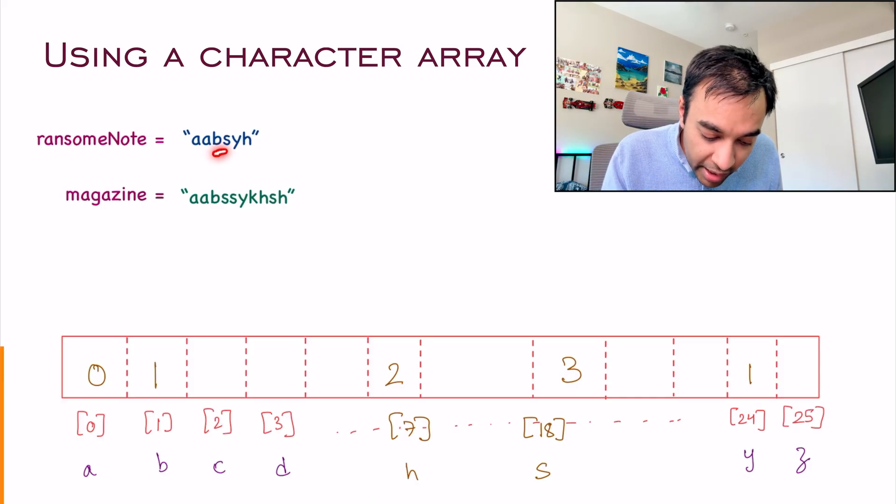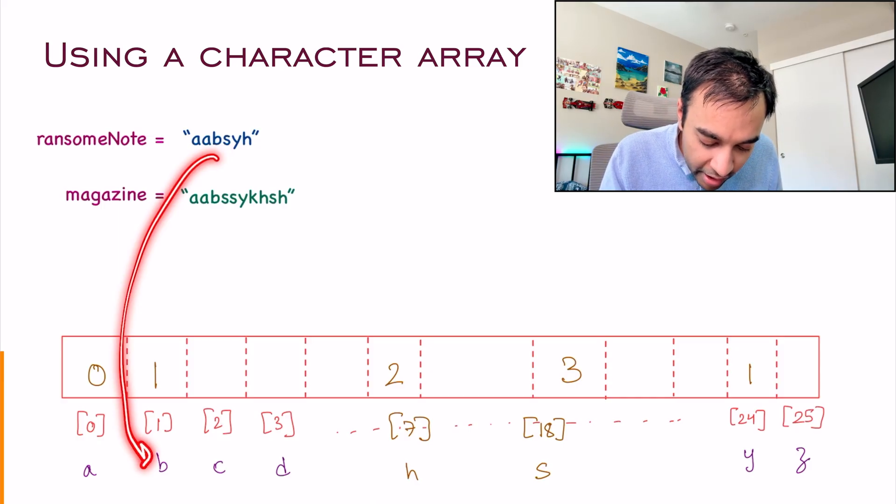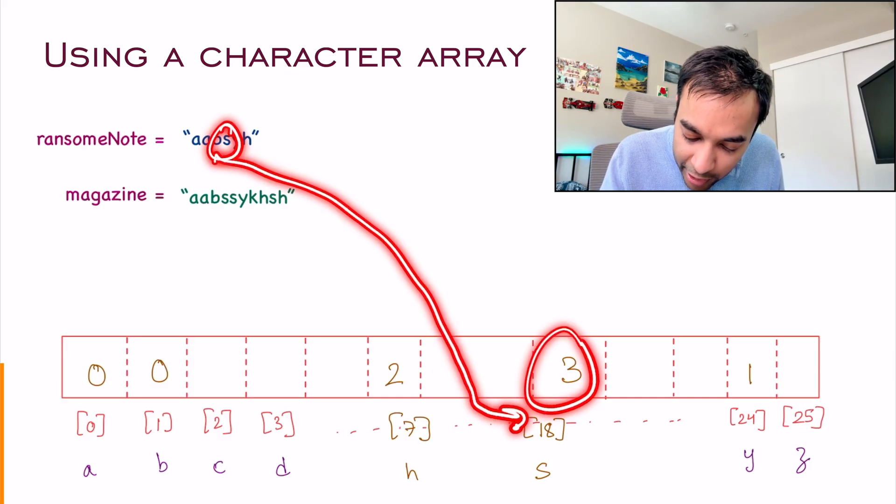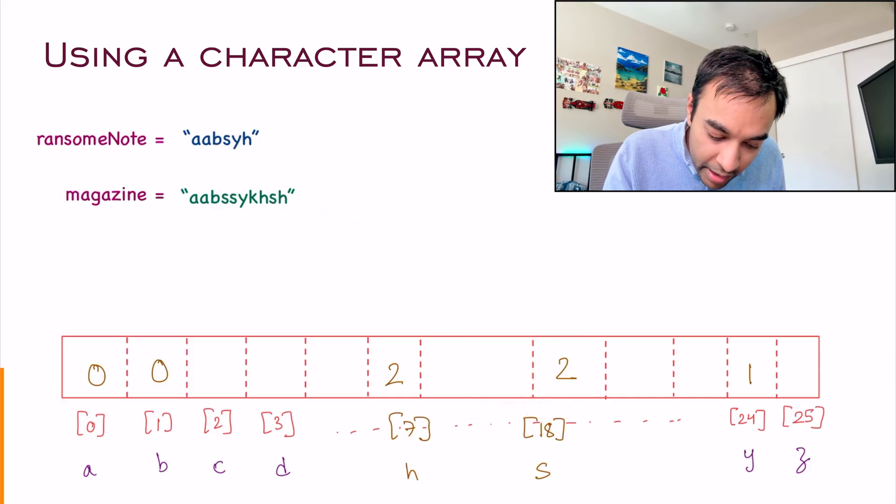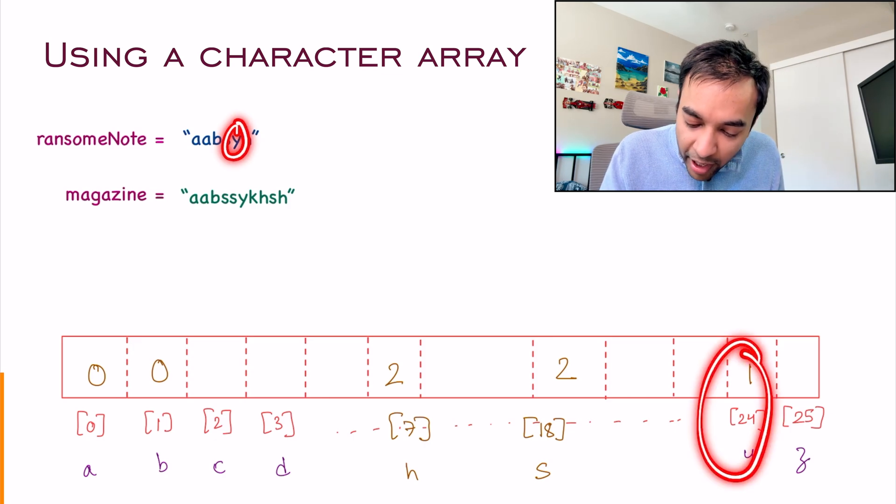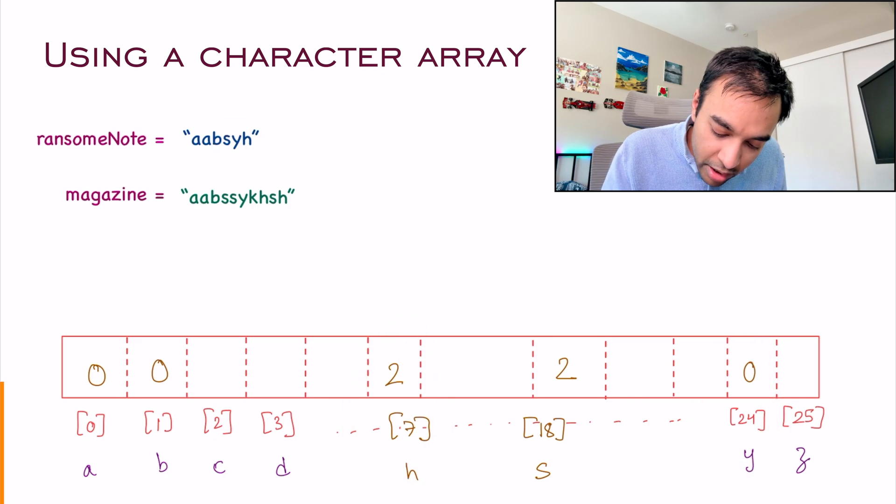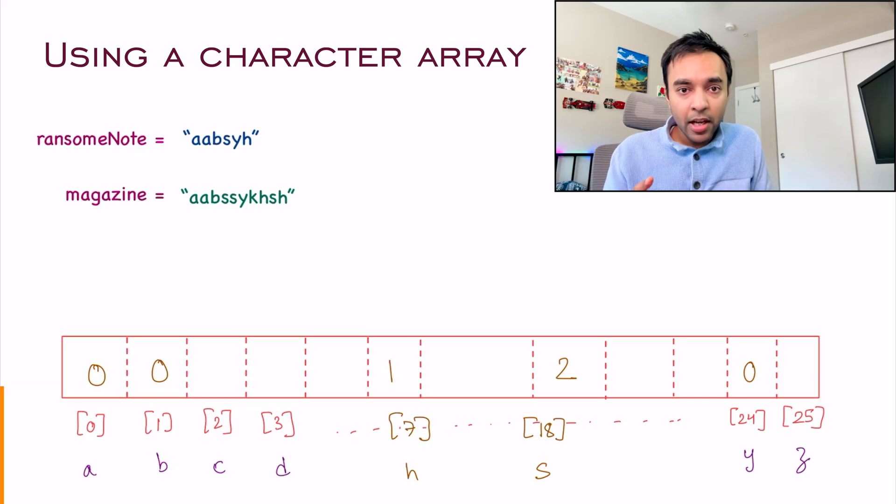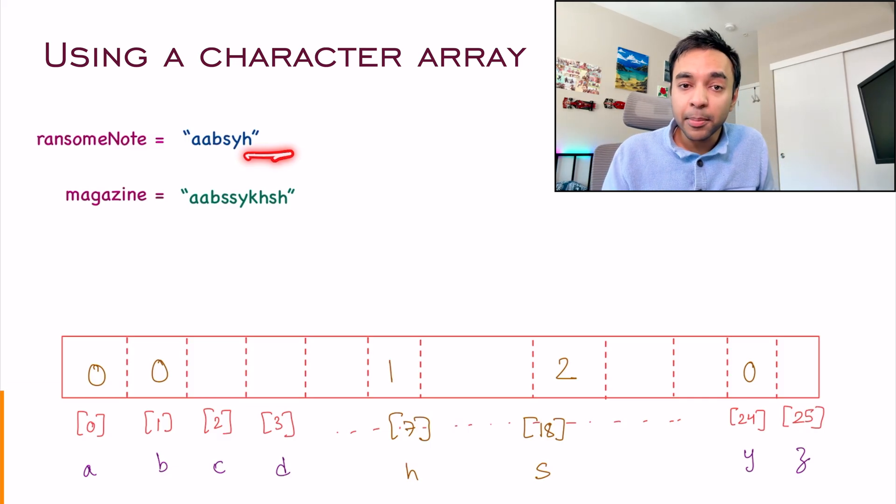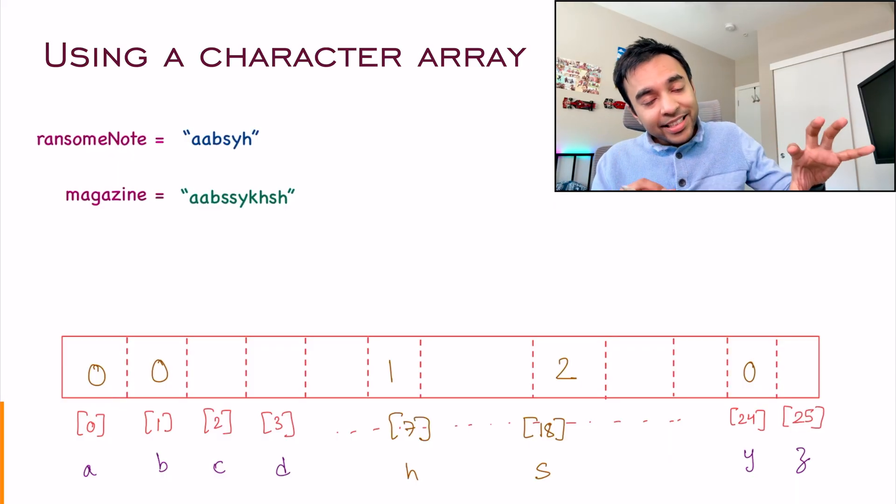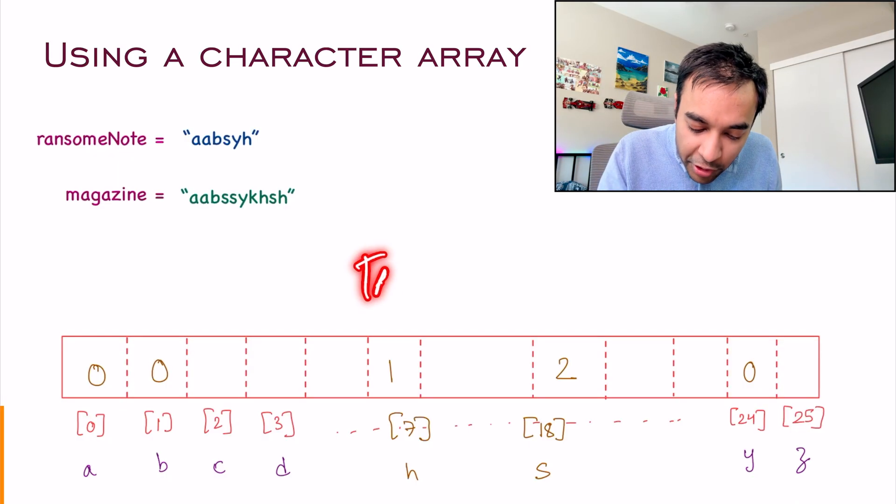Now go ahead. The next character is B. You land here and decrement it. The next character is S. You reach here. The value is 3 and you decrement it. Then you have a Y. Y is 1, so you can decrement it. And then you have an H. You can decrement this value as well. You don't have any more characters remaining. So you were able to consume every character. In this example, you can return true as your answer.